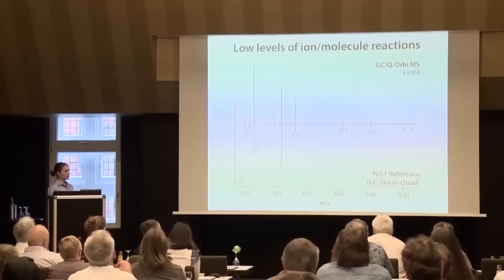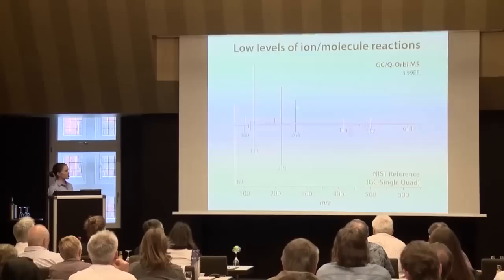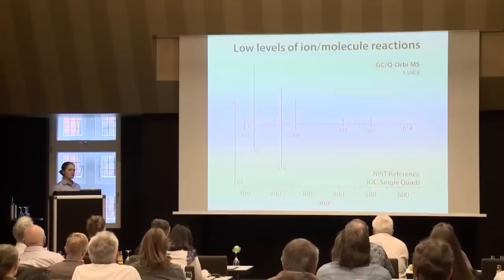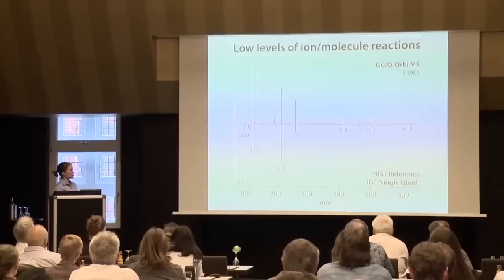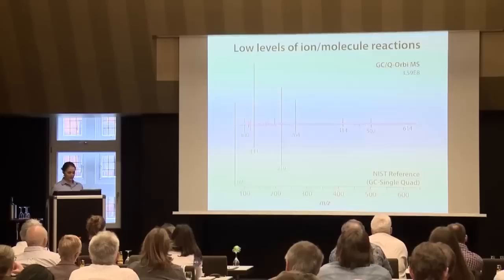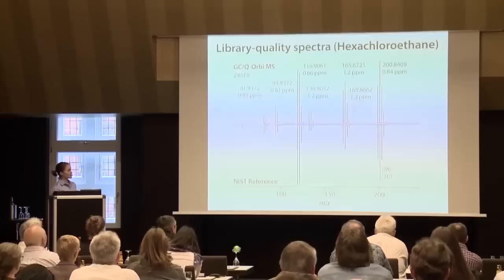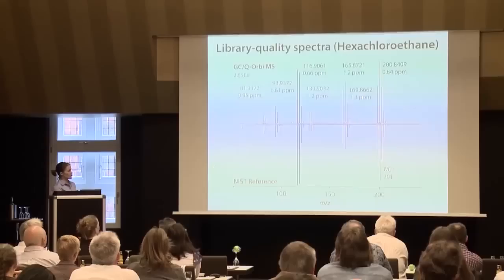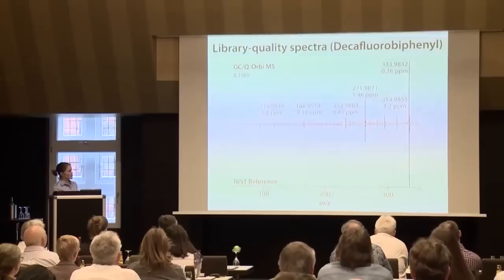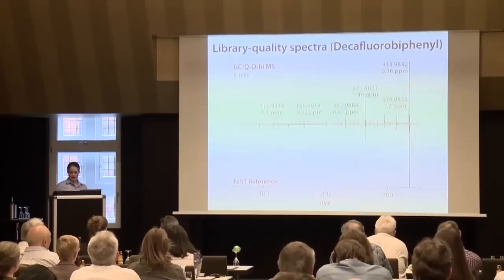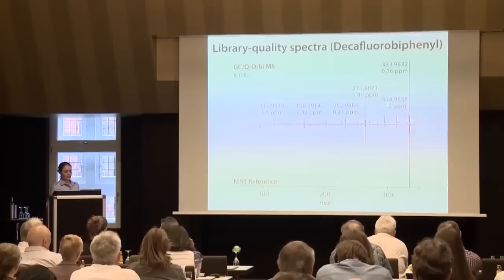Going to the NIST reference spectrum — if one is familiar with trapping quad spectra of FC-43, we know that water reactions are a big deal. Through a lot of optimizations of the gases, tubing, and scan cycle, we were able to get to very low water reactions that make our spectra match well to reference spectra. For instance, here is hexachloroethane, where again we have sub-ppm mass accuracy and it matches well to the single quad reference spectrum. Here is decafluorobiphenyl — again the same thing: low mass errors, high resolution, and fidelity for library matches.